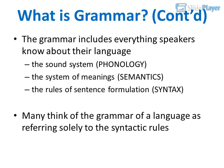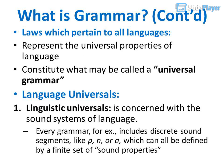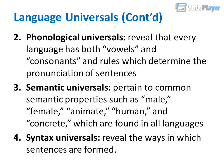The grammar includes everything speakers know about their language: the sound system (phonology), the system of meanings (semantics), and the rules of sentence formulation (syntax). Many think of grammar as referring solely to syntactic rules. Laws which pertain to all languages represent the universal properties of language and constitute what may be called a universal grammar. Phonological universals reveal that every language has both vowels and consonants and discrete sound segments — like p, n, or a — which can be defined by a finite set of sound properties, as well as rules which determine the pronunciation of sentences.